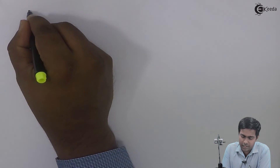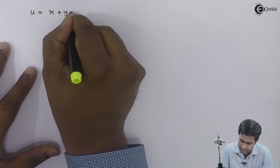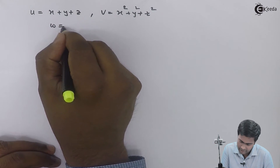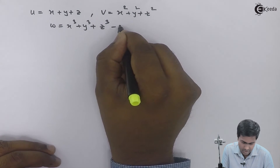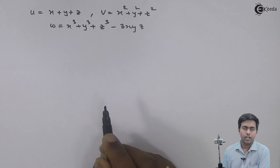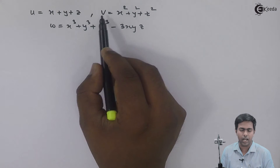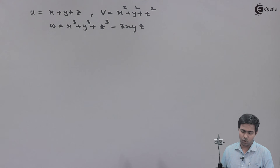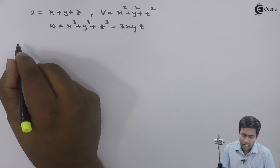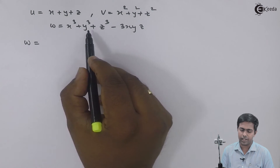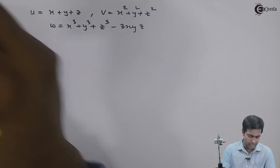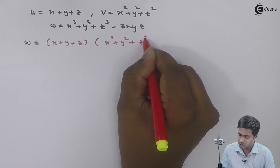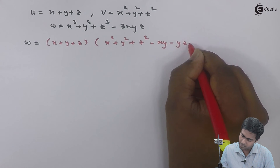Here u = x+y+z, v = x²+y²+z², and w = x³+y³+z³−3xyz. To find the relationship between u, v, and w, we use the algebraic identity: x³+y³+z³−3xyz = (x+y+z)(x²+y²+z²−xy−yz−zx). The part (x+y+z) is u, and (x²+y²+z²) is v, so we can replace those parts accordingly.